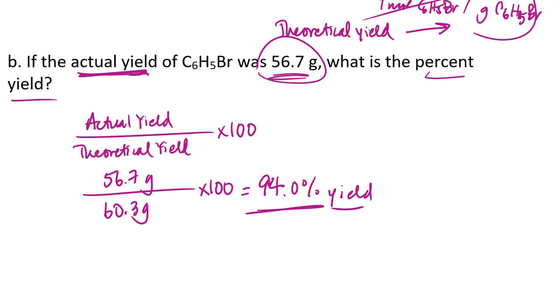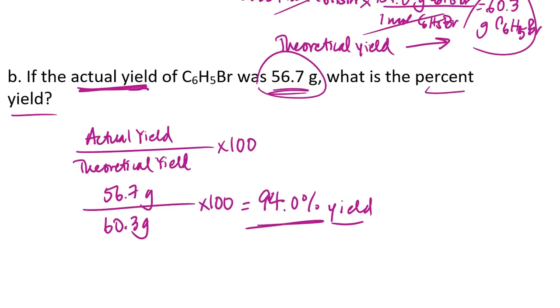So what that means is I got 94 percent of the 60.3 grams that I was expecting. So work some of the practice problems. See if you can calculate some of these yields. If there are any questions, by all means, email me, and obviously we'll be discussing this concept in class. And I'll see you then. Have a good night.